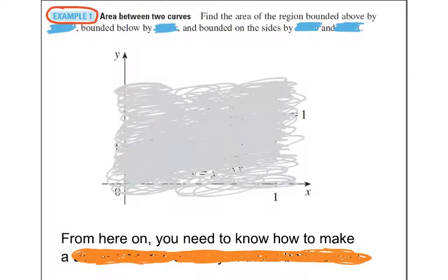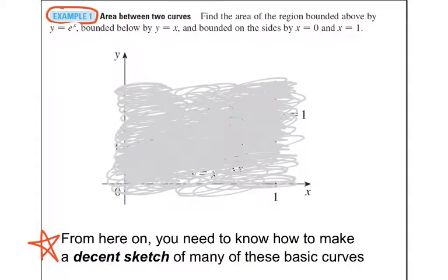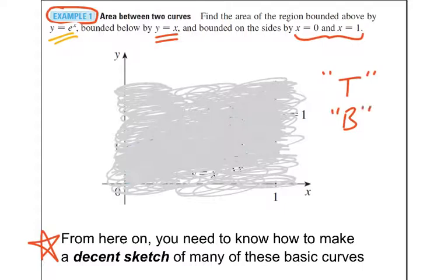Let's try Example 1: find the area of the region bounded by y equals e to the x above, y equals x below, and bounded on the sides by x equals 0 and x equals 1. It's really important in calculus that you know a general sketch of the basic parent functions. So here we have e to the x and y equals x — you have to be able to graph that by hand with no calculator. Try to graph them and then we'll bound that area from 0 to 1. We need to determine what is the top and what is the bottom.